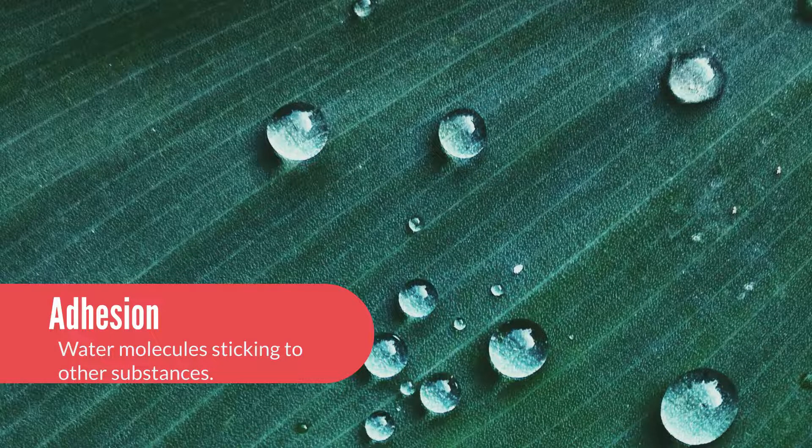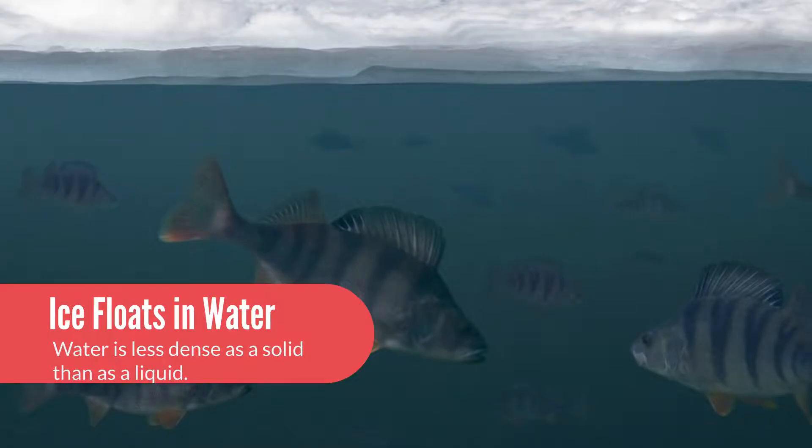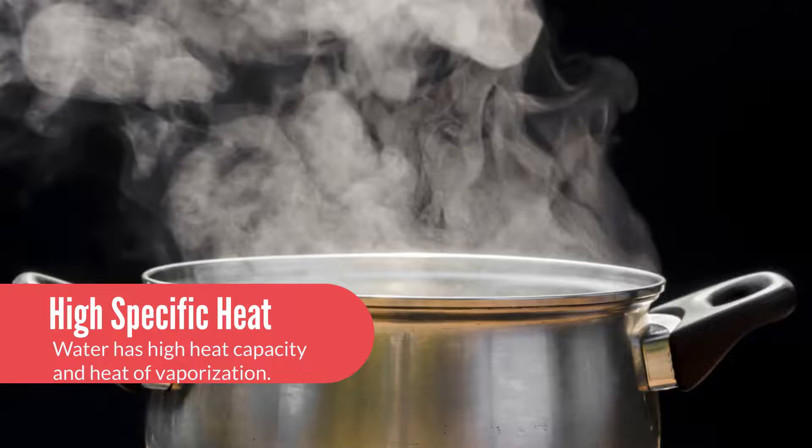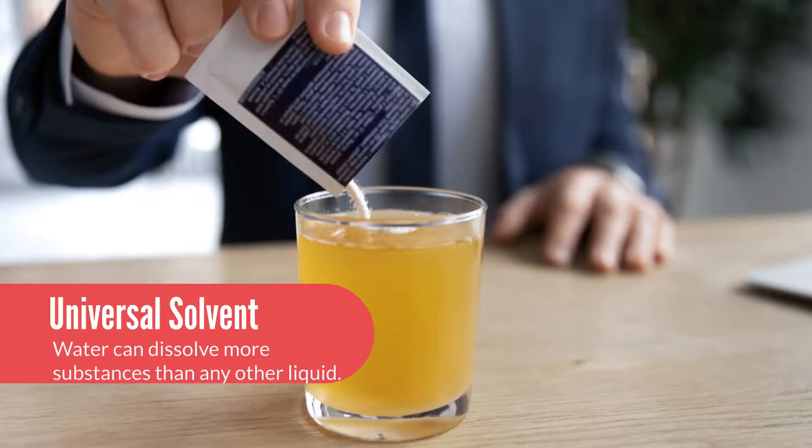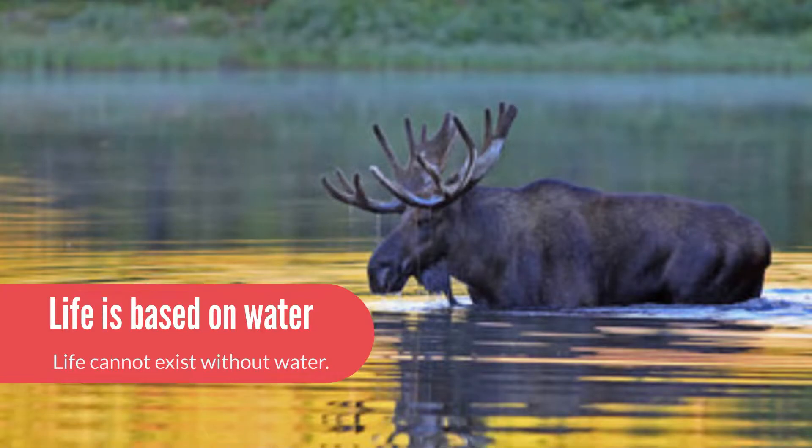It gives water its high surface tension, which allows for aquatic insects to walk across the surface of a pond. It allows for solid water to float in liquid water, so that in winter, all the aquatic organisms living in the lake can survive. It gives water its high specific heat and its universal solvent properties. These properties are what allow life to exist in our living world as we know it.